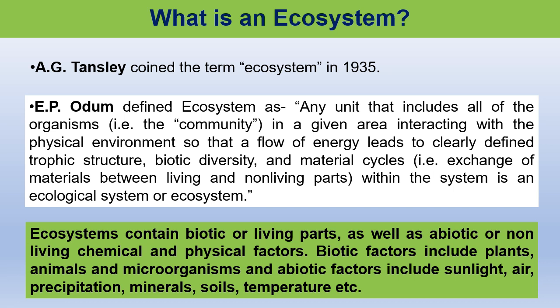Now, components of ecosystems. Ecosystems have two main components: biotic and abiotic. The biotic component includes all living organisms such as plants, animals, and microorganisms. Whereas abiotic includes all the non-living chemical and physical elements present in the environment. Sunlight, air, precipitation, minerals and soils, and temperatures are some examples of abiotic components.